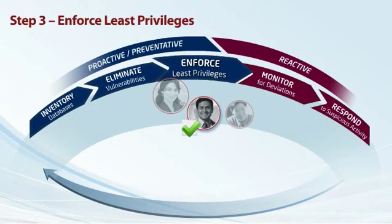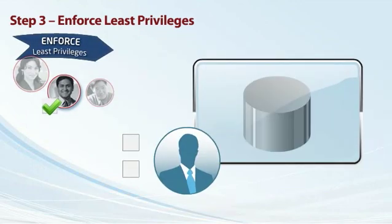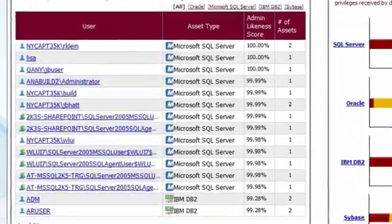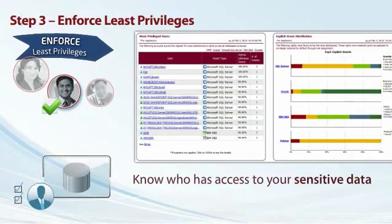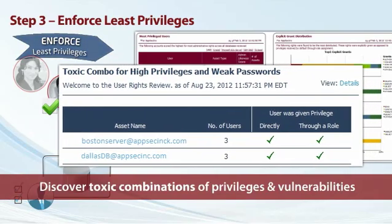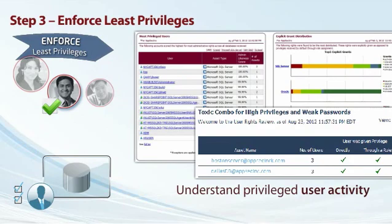Step 3: Enforce Least Privileges. DB Protect's rights management provides a detailed view of an organization's data ownership, access controls, and rights to sensitive information. Rights management enables organizations to restrict sensitive data access to the minimum necessary for employees to do their jobs, and provides the separation of duties controls necessary for enterprises to meet compliance requirements.